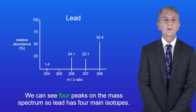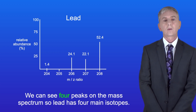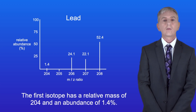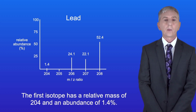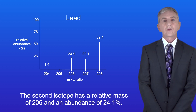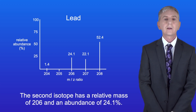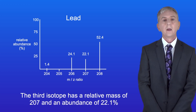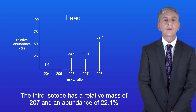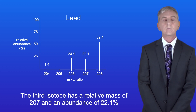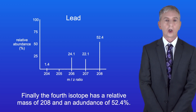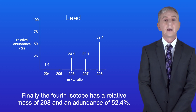We can see four peaks on the mass spectrum, so lead has four main isotopes. The first isotope has a relative mass of 204 and an abundance of 1.4%. The second has a relative mass of 206 and an abundance of 24.1%. The third has a relative mass of 207 and an abundance of 22.1%. The fourth isotope has a relative mass of 208 and an abundance of 52.4%.